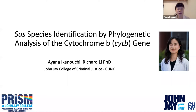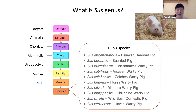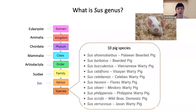Thank you. So, first of all, what is Sus? It is pigs. What we call pigs are classified into the Sus species. In biology, living organisms are categorized by seven ranks, and genus is a rank above species. In the Sus genus, there are 10 species.